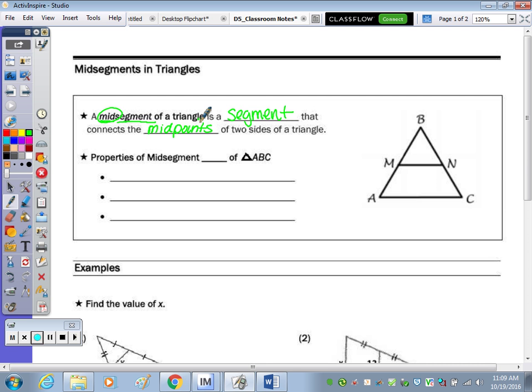So over here, we took the midpoint M, so that means AM is congruent to BM, and the midpoint N, so that BN is congruent to NC, and MN would be the midsegment of this triangle.